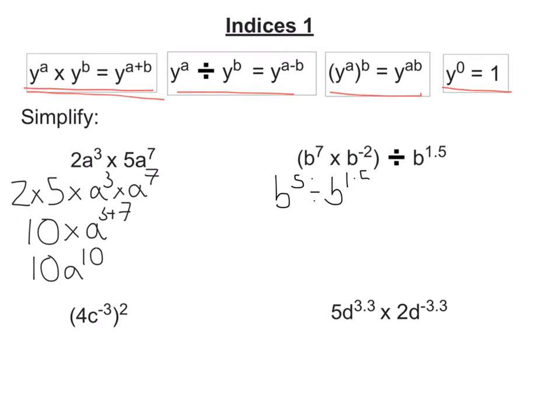So we're going to divide it. And when we are dividing, then we take away the powers. So it's going to be b equals 5 minus 1.5, and b to the power of 3.5 is our answer.